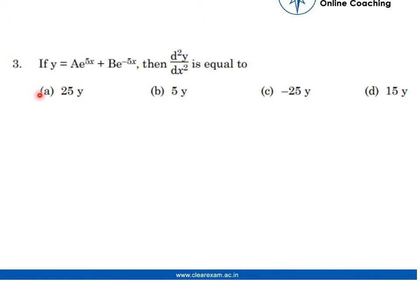Question number 3: y = ae^(5x) + be^(-5x). Then the double differentiation of y is equal to — is it 25y, 5y, minus 25y, or 15y? Let's see what the answer is.